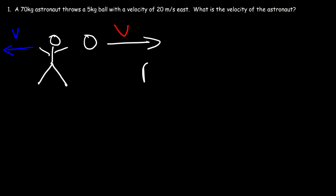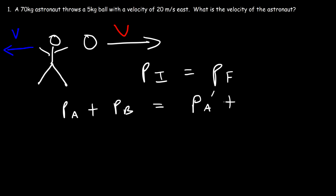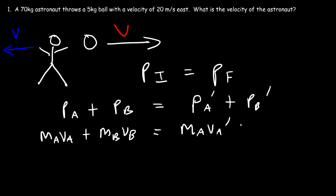So p-initial equals p-final. Before the event, before he throws the ball, we have the momentum of the astronaut plus the momentum of the ball. After he throws it, we have a new momentum of the astronaut and the ball. So MA·VA plus MB·VB equals MA·VA-final plus MB·VB-final. Before he throws the ball, both the astronaut and ball are at rest, so the initial momentum is zero.